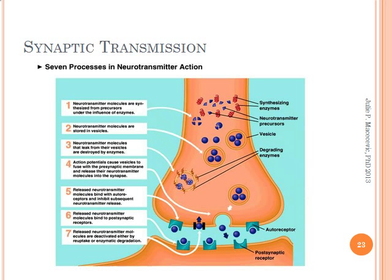As you saw in plate 2.5 of the coloring book, synaptic transmission is the process of neurotransmitters moving across synapses to affect change in the nervous system. The process looks like this: when an impulse reaches the presynaptic terminal, it is accompanied by calcium ions which bind to carrier molecules and result in the synaptic vesicles containing neurotransmitters migrating to the presynaptic membrane, fusing with the presynaptic membrane, and then releasing transmitters into the synapse. This slide shows seven processes of neurotransmitter action.